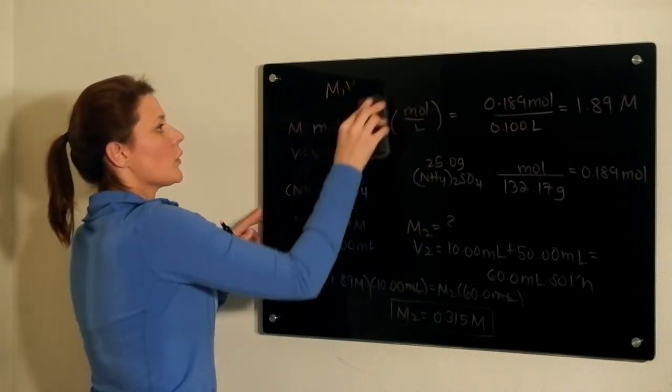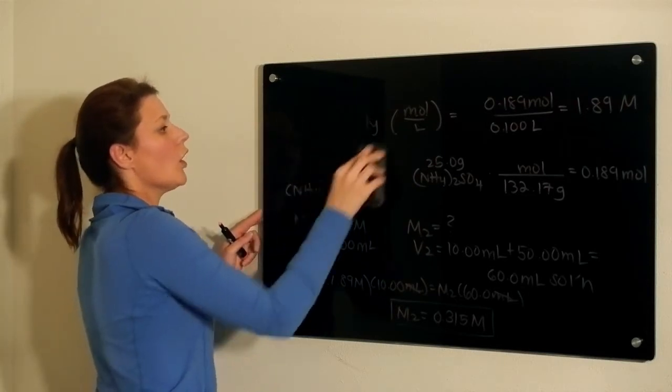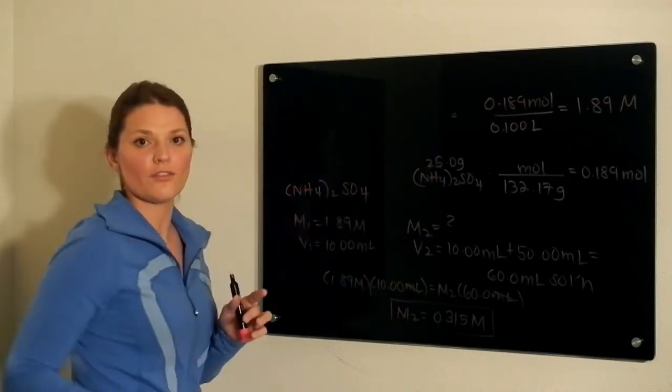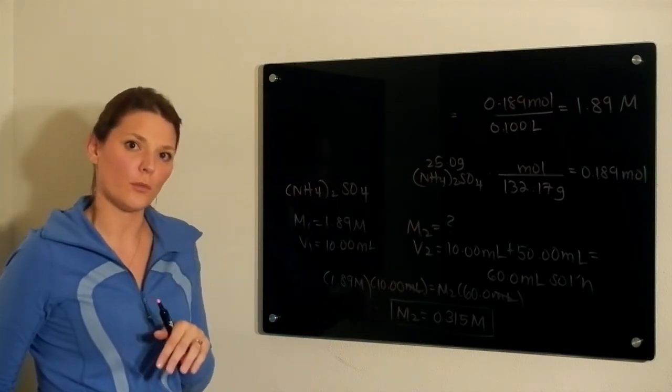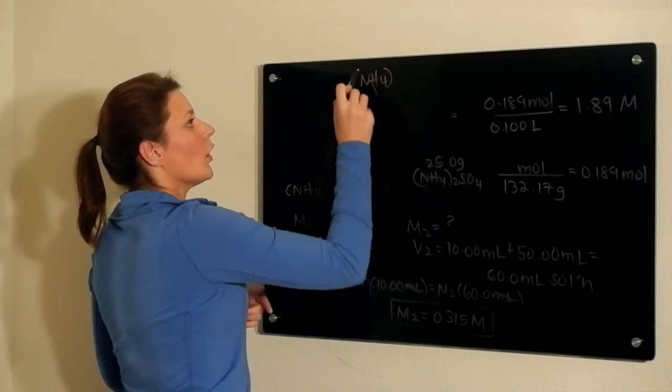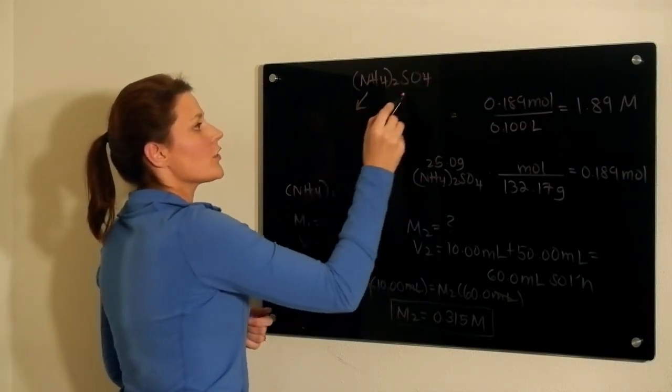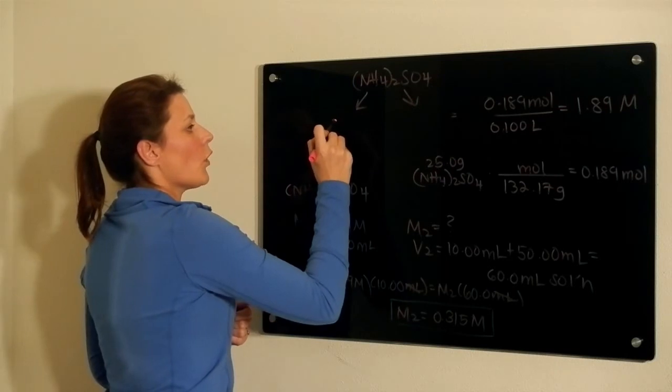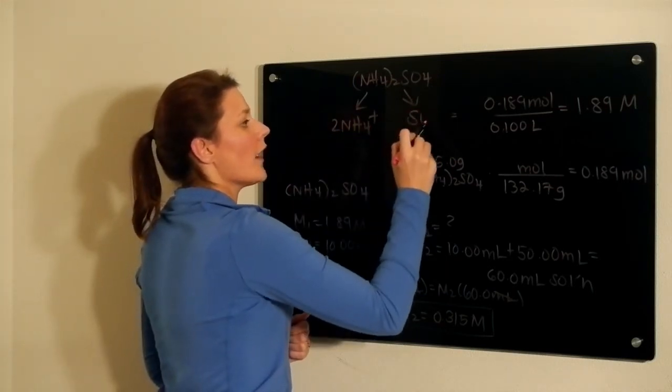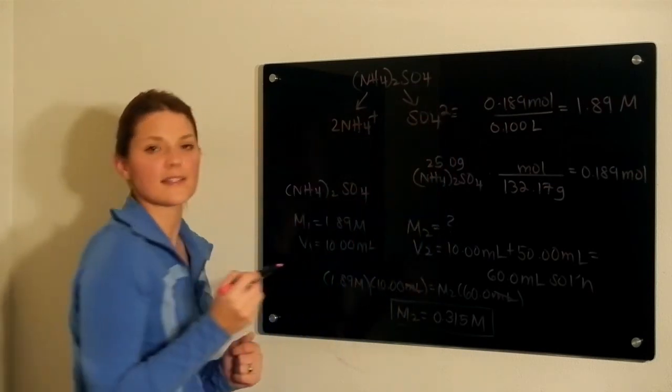The final part of this question asks you to determine what the concentration of the ammonium ions and the sulfate ions are, individual from one another. Remember, because this is a salt, when you put it into water, it is going to break apart. You will form two NH4+ ions and one SO4 2- ion.